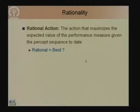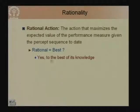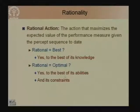Rational action in the light of bounded rationality means maximizing the expected value of the performance measure given the percept sequence available to the agent. Does rational action mean the best action? Yes, but to the best of the agent's knowledge based on what percepts it has access to. Does rational mean optimal? Yes, to the best of the agent's abilities and subject to resource constraints — time limitations, space limitations. Given these constraints and its abilities, the agent should take the best action expected to maximize its utility.